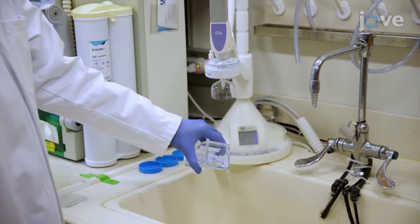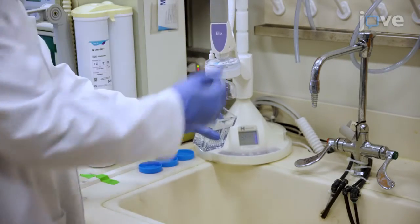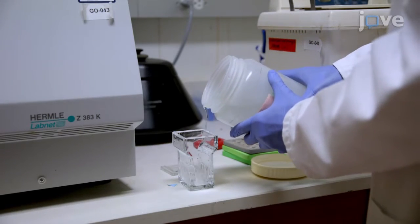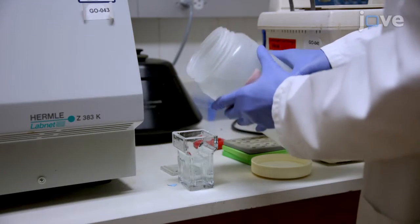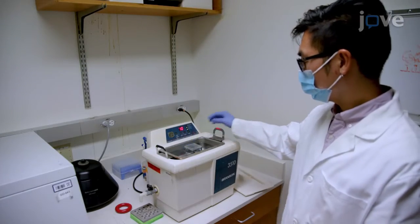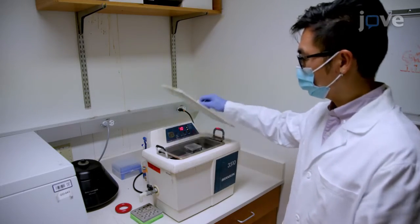Pour out the acetone and rinse the coverslips three times with distilled water. After repeating the sonication and acetone, fill the jar with enough potassium hydroxide to cover the coverslips. Sonicate the jar again, covered, for 20 minutes at 40 degrees Celsius.